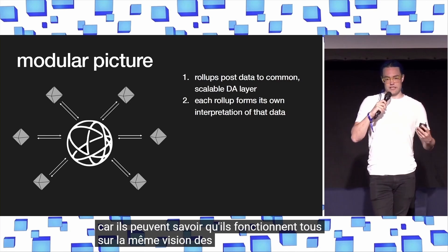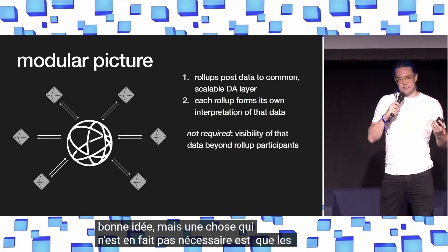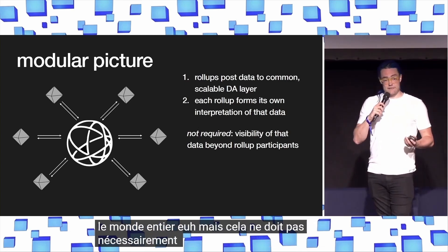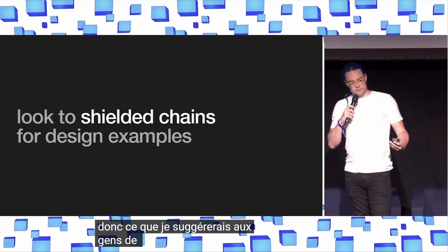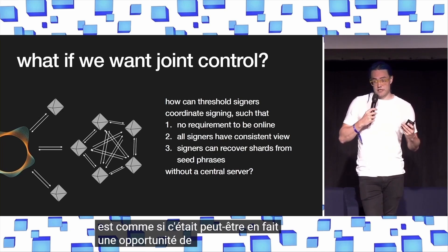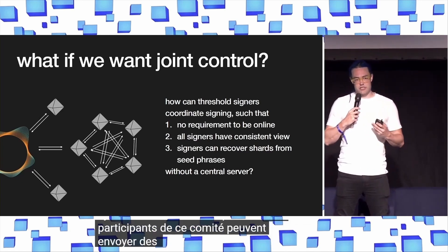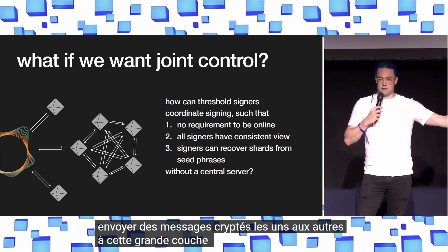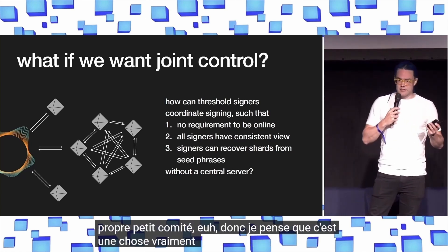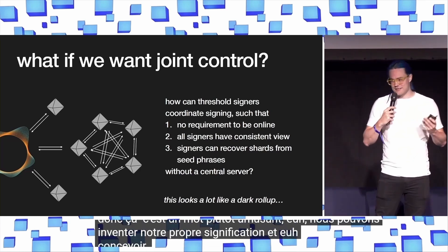Discussions are emerging about implementing a private posting and verification space next to Celestia's for all rollups. They all operate on the same view of what information is out there, but data posted to the underlying base layer doesn't necessarily need to be visible to anyone beyond the rollup participants. The suggestion is to look to shielded chains for design examples — building a system where rollup committee participants post encrypted messages to a global DA layer like Celestia, but restricting visibility to only the members of that committee. This looks a lot like a dark rollup, a fun new concept we can invent meaning for and design new kinds of rollups.